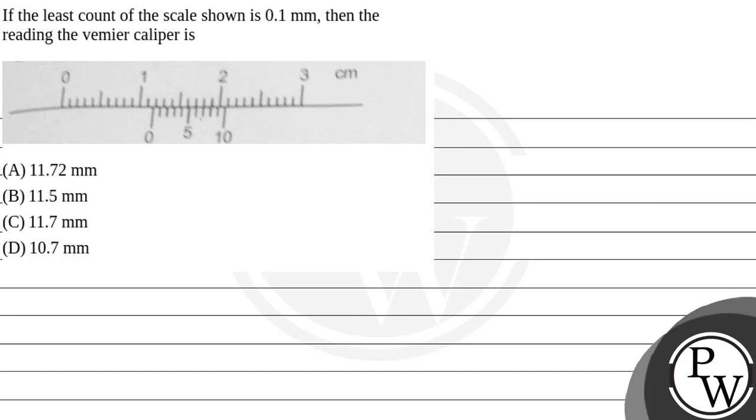Hello bachu, let's read the question. If the least count of scale shown is 0.1 mm, then the reading of vernier caliper is: 11.72 mm, 11.5 mm, 11.7 mm, or 10.7 mm. We have to find which one of the options is correct here.